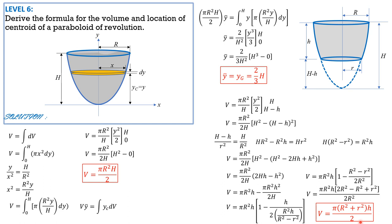Instead of memorizing the derivation step by step, I suggest memorizing the general formula π(R² + r²)h/2, because it has two applications: for a paraboloid of revolution with two bases and for one base. We just set small r to 0 if there is only one base, and the formula reduces to π R²H/2, going back to the original formula. I hope you can remember this formula and derive it on your own.